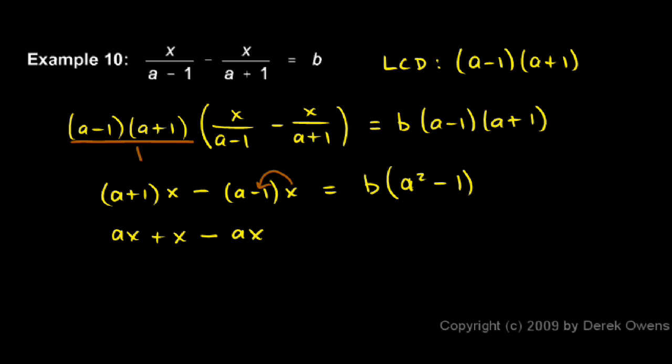Notice here, x multiplied by that minus 1 is a minus x, but I also have a minus there. So when I subtract that minus x, it becomes a plus x. On the right, I have b times (a squared minus 1).